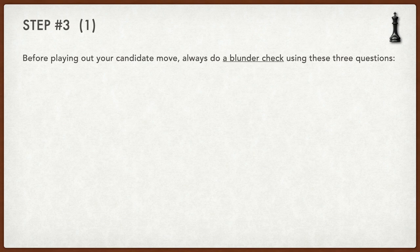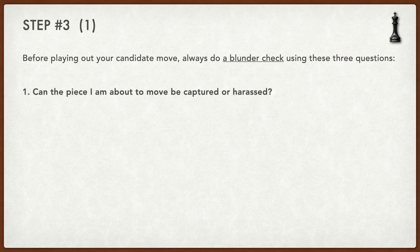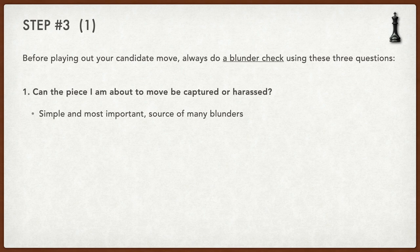Now we come to step three of the algorithm. Once you have decided on the move you want to play, before you play it you have to do a blunder check. This is very, very important — this is what helps you reduce blunders. You do the blunder check using three questions, which are very similar to the questions you used when looking at the consequences of your opponent's move. Question number one is: can the piece I'm about to move be captured or harassed? If you move your queen to d5, can your opponent capture your queen?